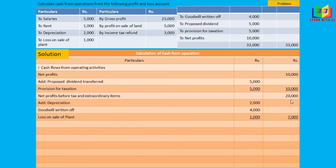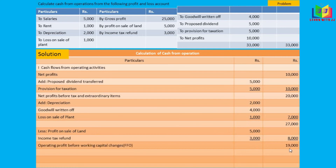Adding 7,000 to 20,000 gives us 27,000. Next we write the non-operating incomes — profit on sale of land of 3,000 and income tax refund of 5,000, totalling 8,000. We subtract this: 27,000 minus 8,000 gives 19,000. This is the operating profit before working capital changes, also known as funds from operations.